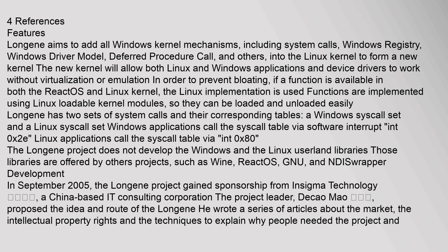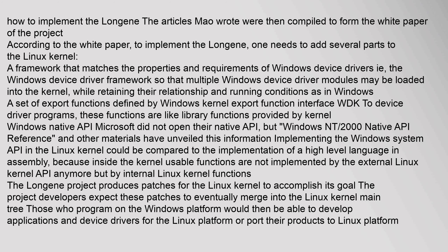In September 2005, the Longin project gained sponsorship from Insigma Technology. The project leader, DeSao Mao, proposed the idea and roots of Longin. He wrote a series of articles about the market, intellectual property rights, and the techniques to explain why people needed the project and how to implement Longin. The articles Mao wrote were then compiled to form the white paper of the project.